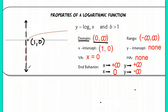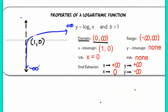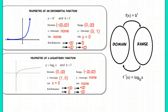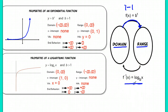The end behavior is the opposite of the exponential function as well. As x approaches positive infinity, our function goes to positive infinity. As x approaches 0, we go to negative infinity. This is because for a one-to-one function, the domain of f maps to the range, and the domain of f-inverse was the range of f — it's a mapping back and forth, so the domain and range swap for f-inverse.